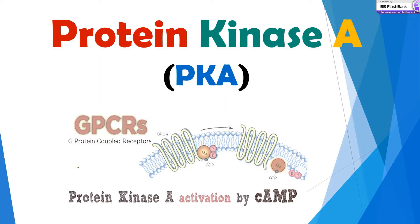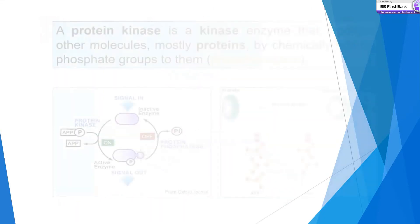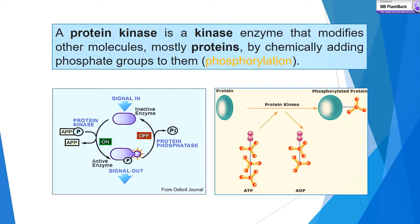Protein kinase is a kinase enzyme that modifies other molecules, mostly proteins, by chemically adding phosphate groups — that means phosphorylation. As seen in the figure, in the presence of protein kinase, an inactive protein becomes activated. During this, ATP is converted to ADP — adenosine triphosphate to adenosine diphosphate — and this signaling regulates signal in and signal out, on and off.